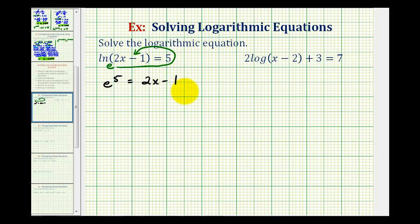Now we'll solve this for x. We'll add one to both sides of the equation. We'd have e to the fifth plus one equals two x, divide both sides by two. This simplifies to x equals e to the fifth plus one divided by two.